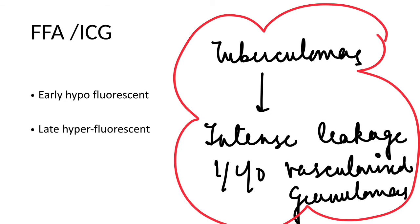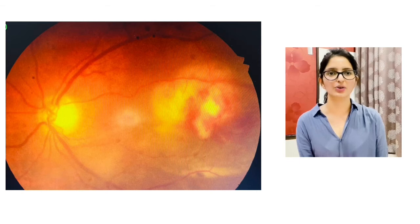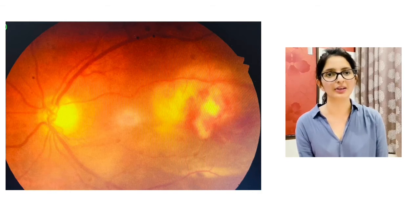Most lesions will have early and late hyperfluorescence on FFA, unless there is a vascularized choroidal granuloma, which because of its vascularity will have intense leakage in the early phases itself. Similarly, sarcoid granulomas with optic nerve head inflammation and associated retinal vasculitis will also leak immensely in early phases. On ICG, all the lesions will be hypofluorescent throughout the phases, except there can be some RAP lesions detected in tuberculosis. The classical vascularized choroidal granuloma is perivascular in origin, intense yellow with overlying retinal hemorrhages and surrounding exudative retinal detachment.